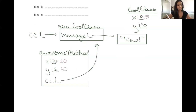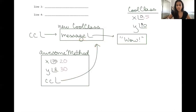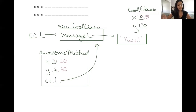The next line says cc.message = "nice". We follow where cc is pointing — to the object we created — look at its message field, and change it to "nice". The final line inside awesomeMethod reassigns cc to a new CoolClass object, so we create a new CoolClass object to represent that.